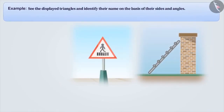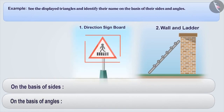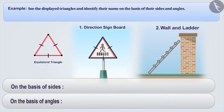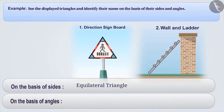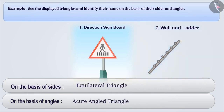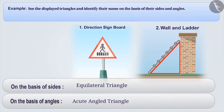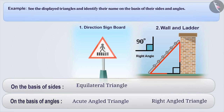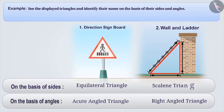See the displayed triangles and identify their names on the basis of their sides and angles. A direction signboard is represented in the first figure. In this figure, all three sides appear equal. Therefore, on the basis of sides, we can say that this is an equilateral triangle. Here we can also see that all angles are smaller than a right angle, which means they are acute angles. Therefore, on the basis of angles, we can say that this is an acute angle triangle. In the second figure, a ladder is making a triangle with the wall and the ground. We know that a wall makes a right angle with the ground. In this way, we can say that there is one right angle in this triangle. Therefore, on the basis of angles, we can call it a right angle triangle. But if we observe carefully, we find that none of the sides of the triangle are equal. Therefore, on the basis of sides, we can say that this triangle is a scalene triangle.